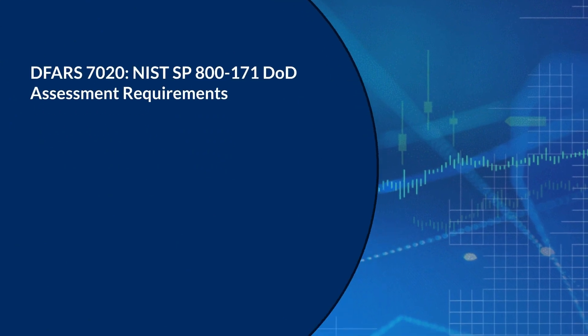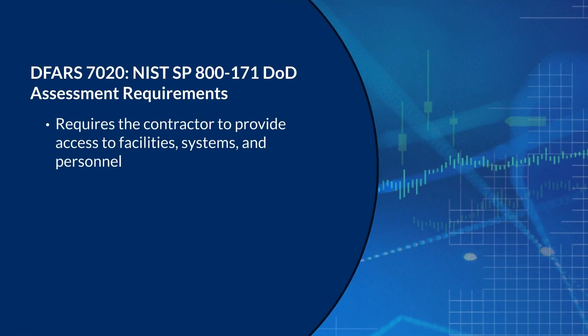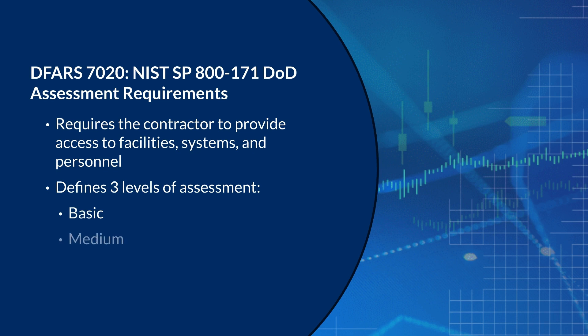DFARS 7020 requires that contractors provide the government access to its facilities, systems, and personnel to conduct a medium or high assessment if necessary. 7020 defines different levels of assessments. A basic assessment is a self-assessment completed by the contractor. In a medium assessment, DIBCAC will review the contractor's SSP and its descriptions of how each requirement is met. In a high assessment, DIBCAC will perform a very thorough on-site or virtual audit that assesses the contractor's documentation and the technical implementation of NIST 800-171.